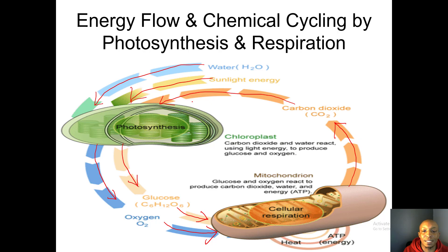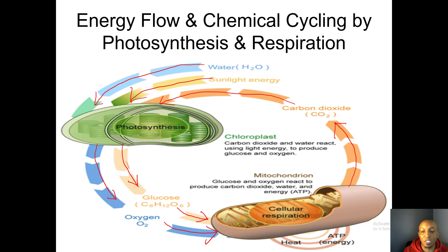That carbon dioxide goes right back into the process of photosynthesis. The products of photosynthesis — glucose and oxygen — are the reactants needed for cellular respiration, and the carbon dioxide produced by cellular respiration goes into photosynthesis as a reactant. That's why it's called one big process: energy flows and the chemicals are cycled constantly through photosynthesis and respiration.